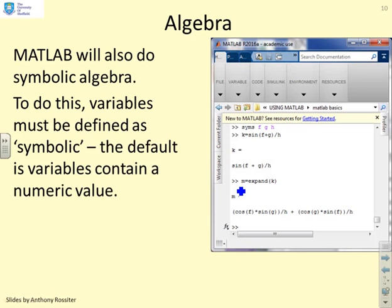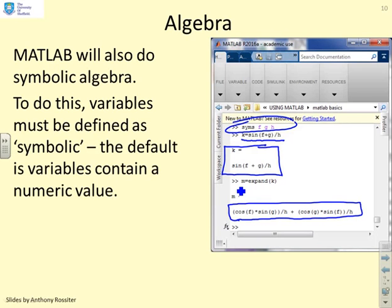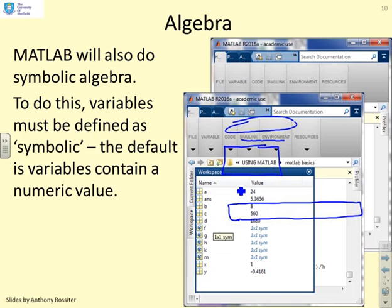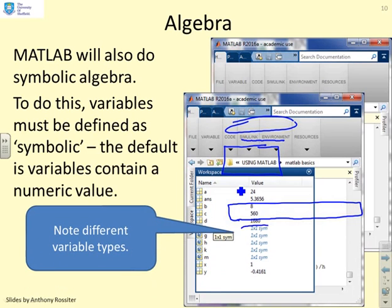MATLAB will also do symbolic algebra. To do this, variables must be defined as symbolic because the default for a variable is a numeric value. You use this command here. Syms has defined the variables f, g, and h as symbolic. What's happened now is when I write k equals sine f plus g over h, it gives me an expression. It says this is algebra, it's not numbers. I can expand that, and you'll see the expansion. It's giving you this long expression here. So MATLAB supports lots of key algebraic calculations. If you look in the workspace, these variables have all been defined as symbolic variables. They don't have numbers in them, they represent some form of algebra.